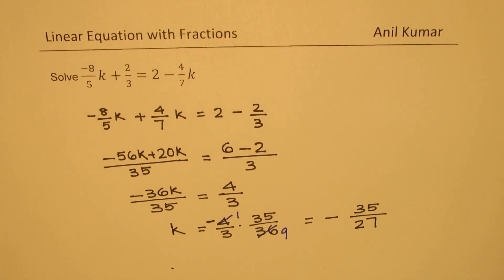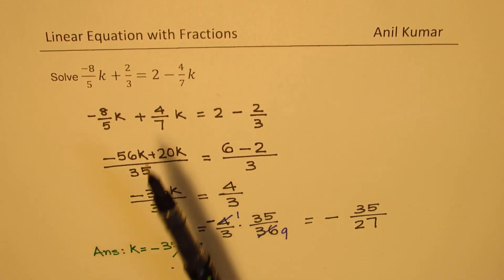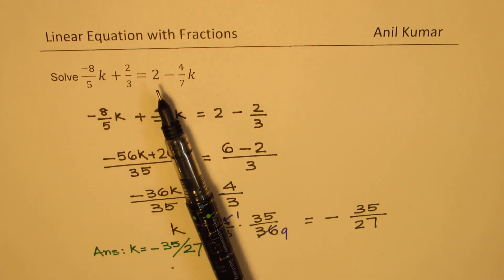Do you get the idea? So that is how you could actually solve this question. So I write on my answer here as k is equal to minus 35 over 27. Is that clear to you? So that is probably the simplest way of solving this particular equation.